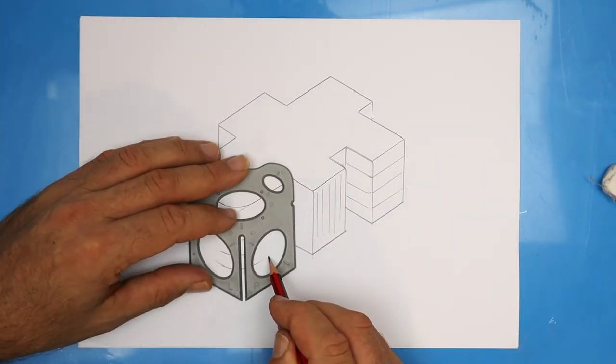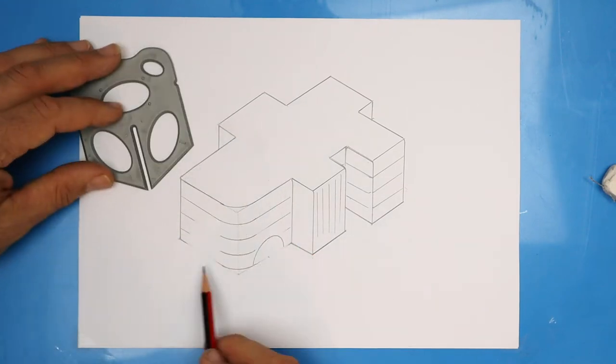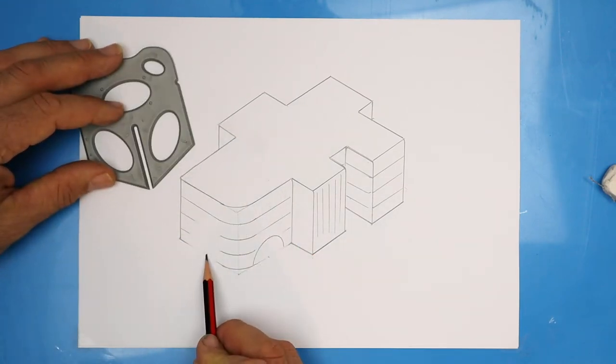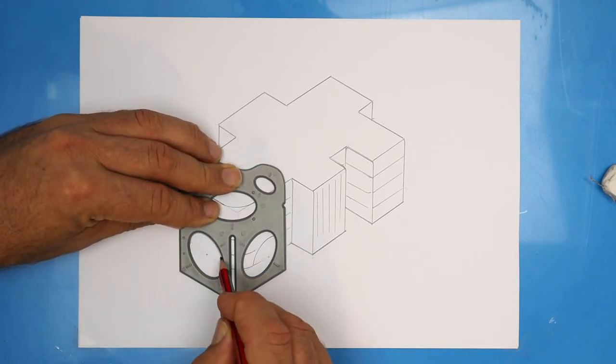Let's make a fancy arch. I'm using the ellipse on this side. So on that line, place a mark halfway, use the left ellipse, center it on the mark and draw in your arch.